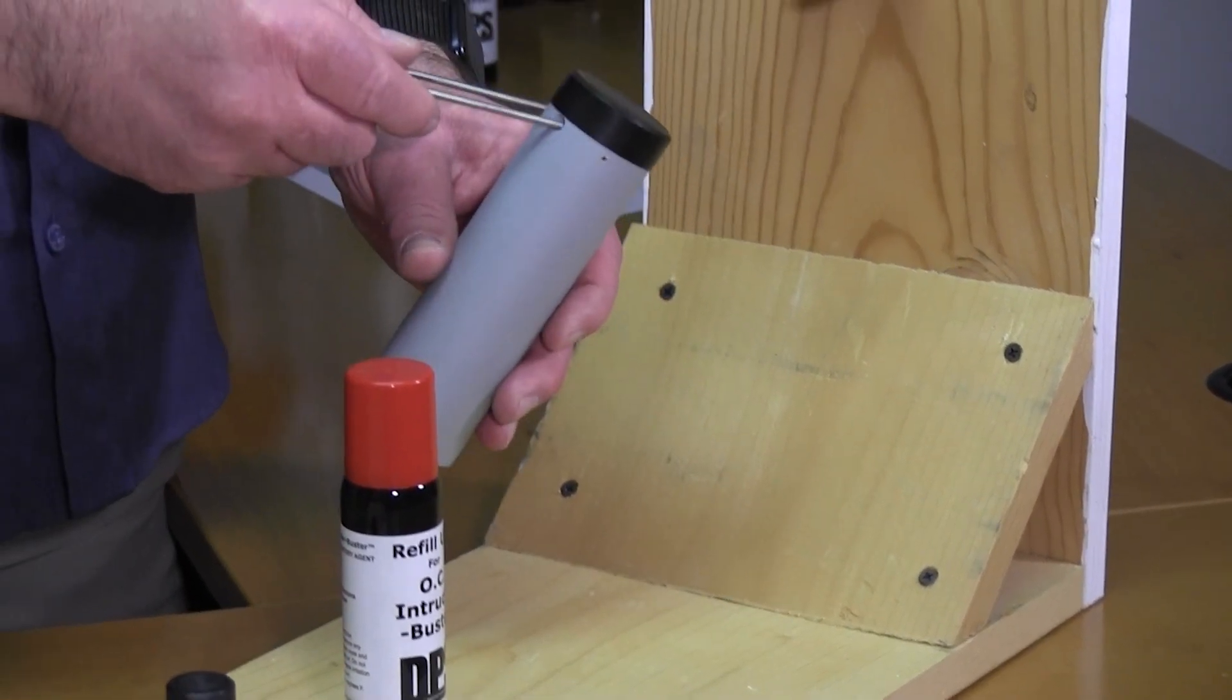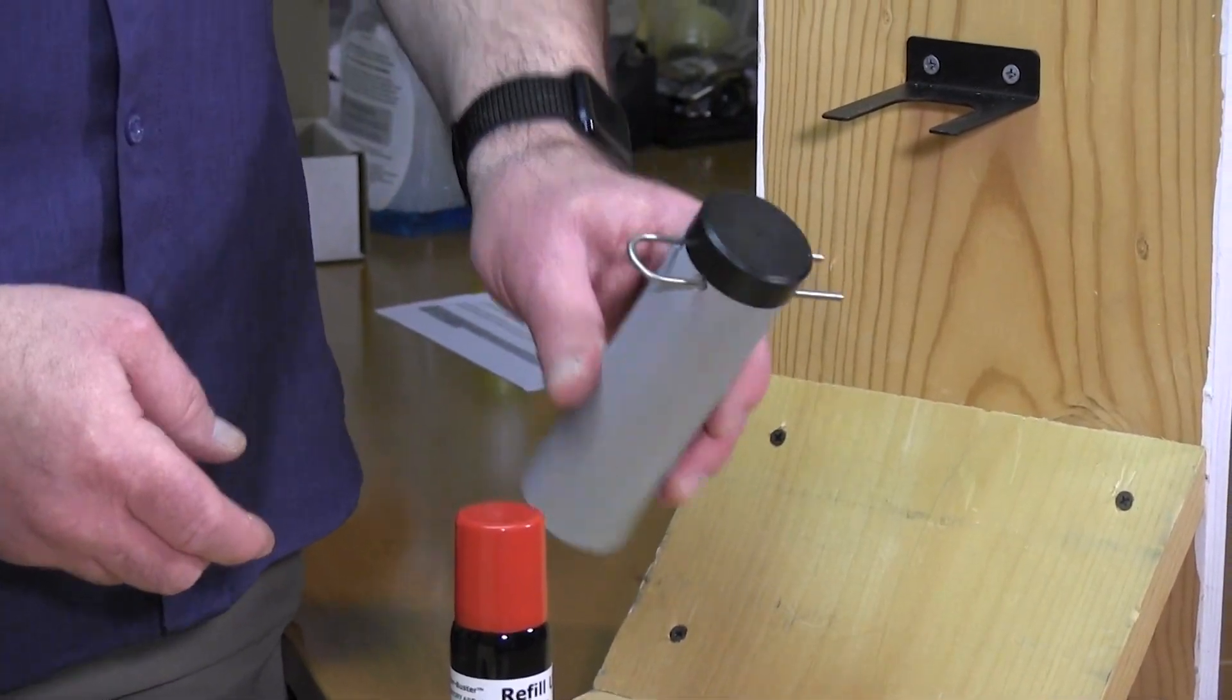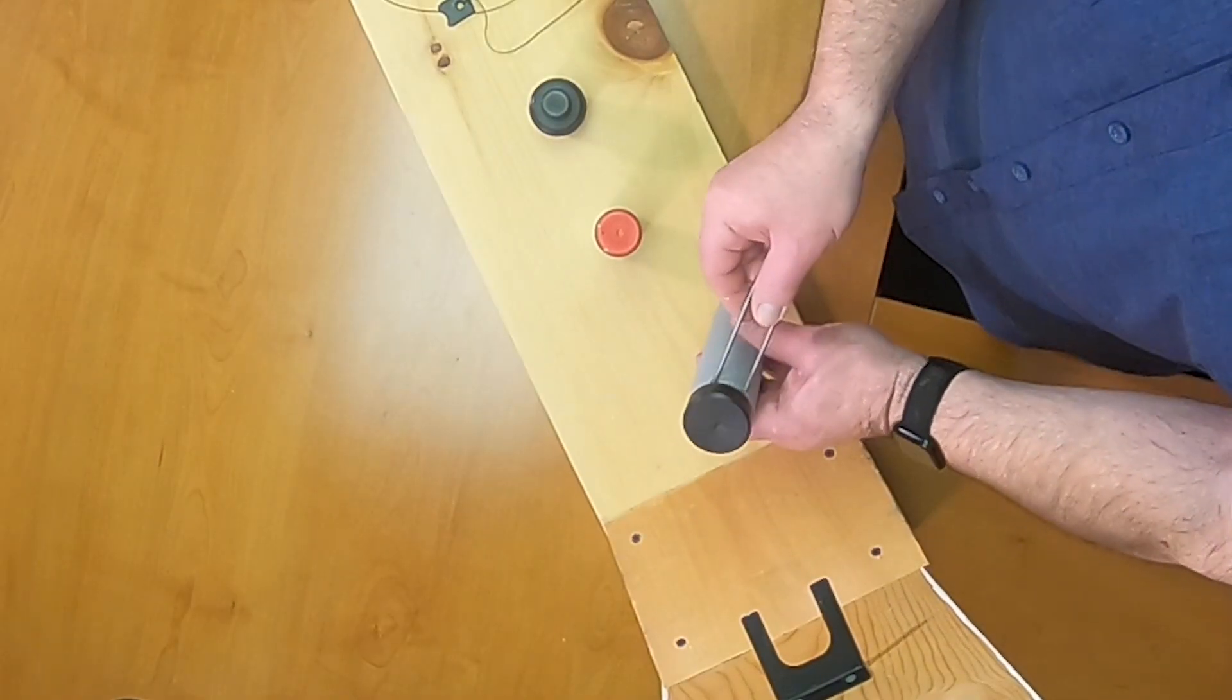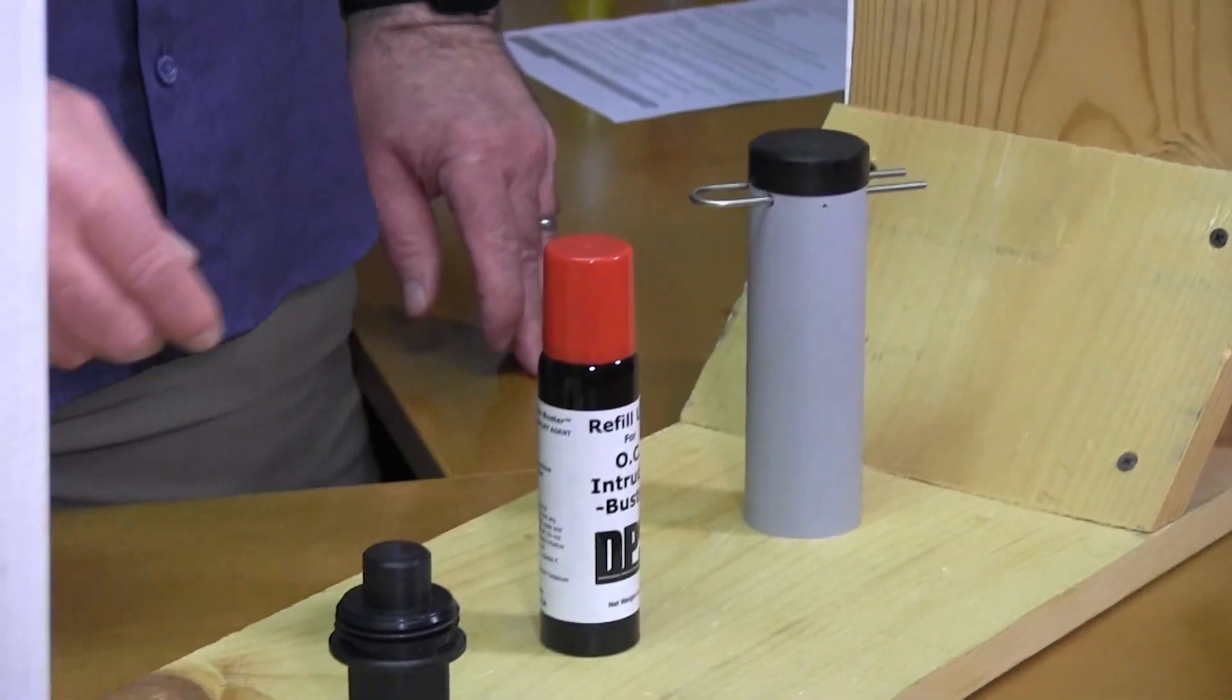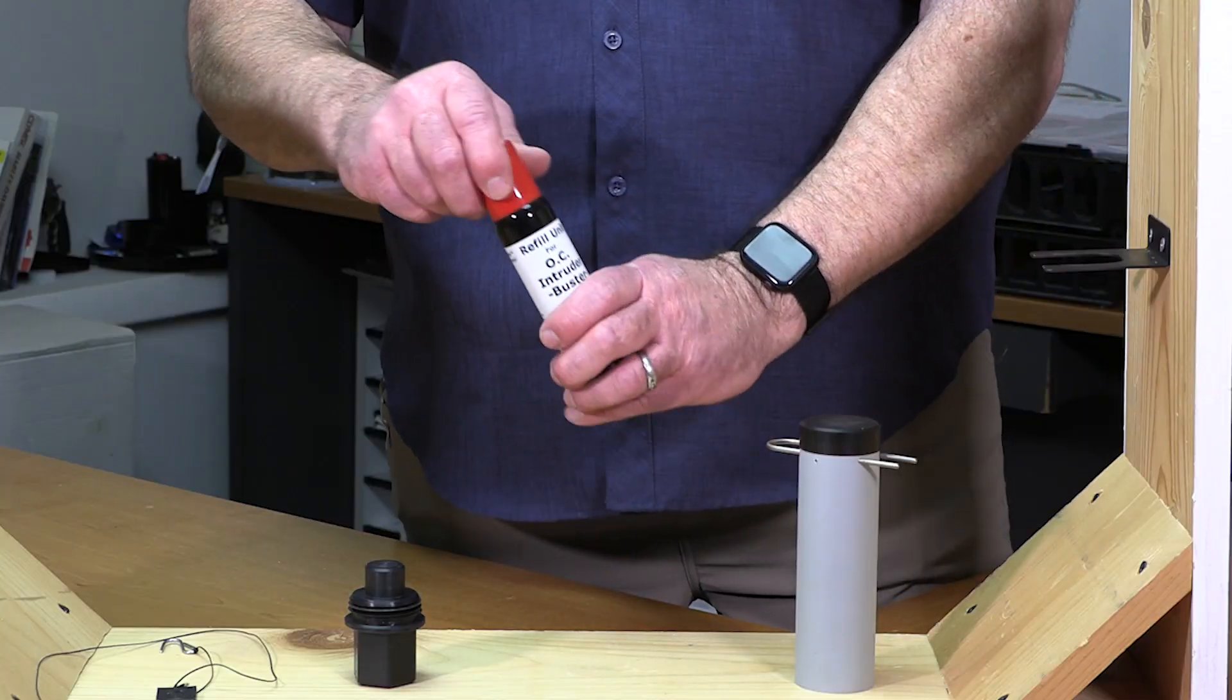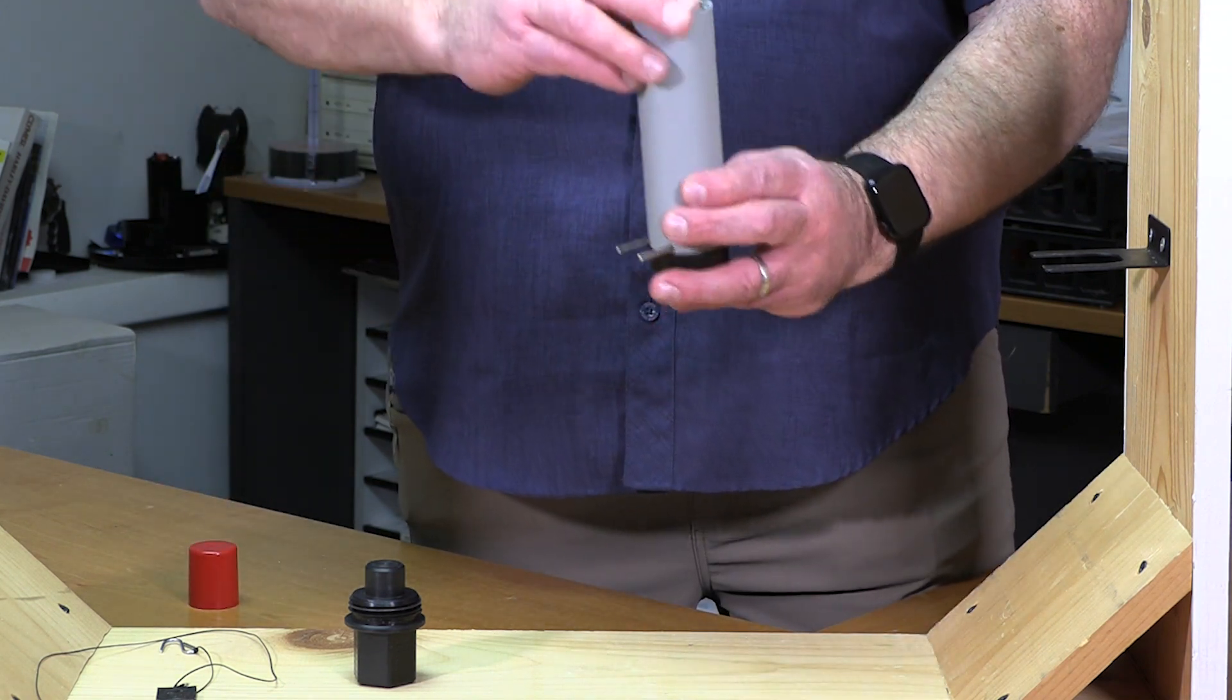The first thing you do is insert the safety pin into the housing, making sure it goes all the way through and you can see it on the other side. The next thing you do is remove the cap from the OC Refill. Insert it, nozzle down, into the housing.